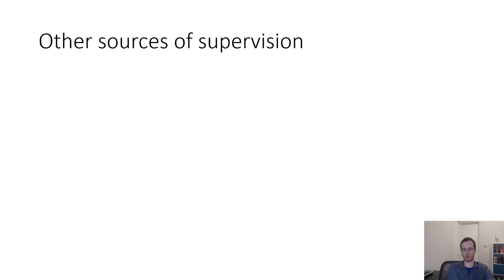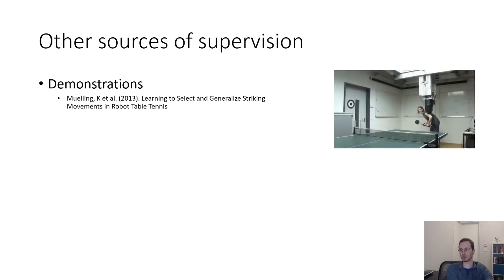Other sources of supervision we can think about. We can think about algorithms that effectively use demonstrations. For instance, this is a video from a paper by Katerina Mulling about how a robot can learn to play table tennis, where initially Katerina provides a number of demonstrations to the robot through kinesthetic teaching, which is then used to bootstrap reinforcement learning.